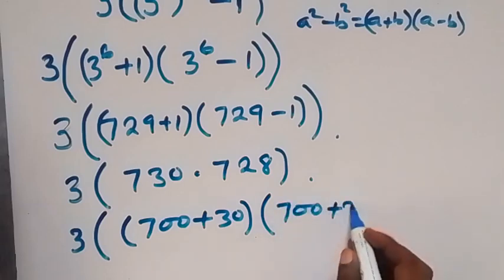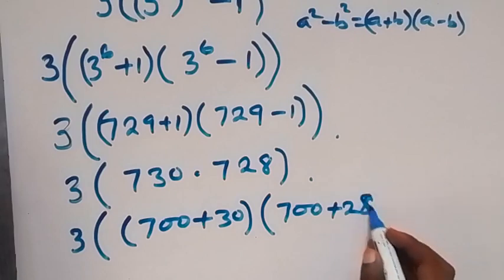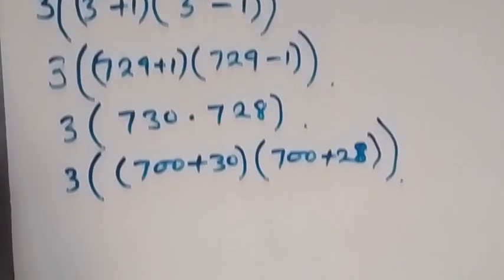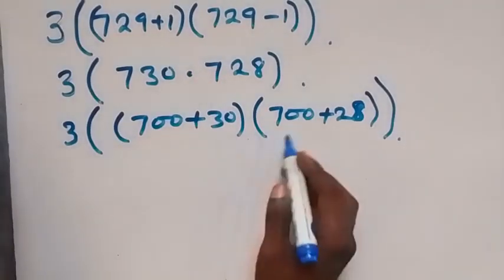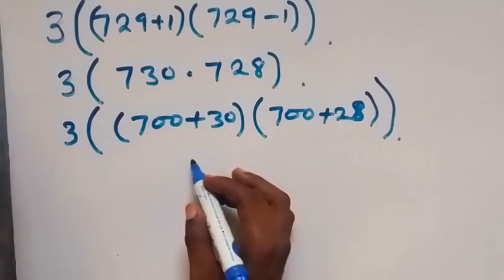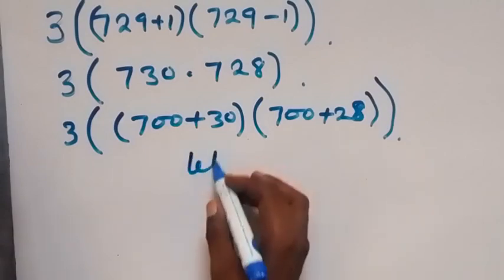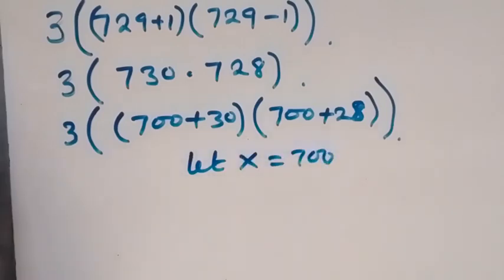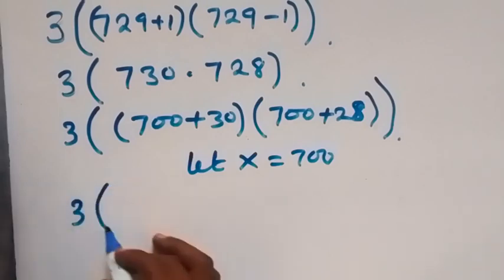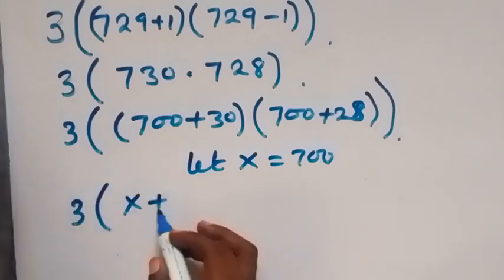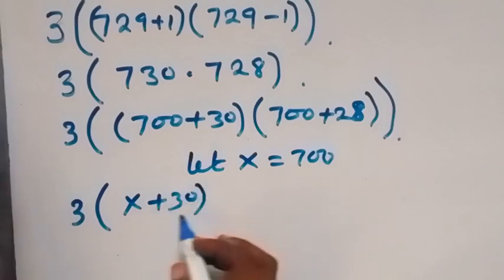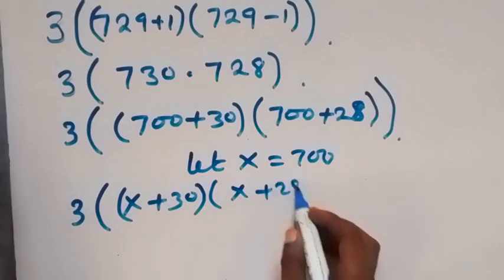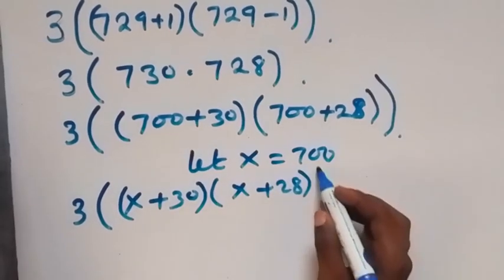Plus 28 here gives us 728. Then we close the bracket. From here, we can use a letter to represent 700. So let x be equal to 700. From here, we can equate it as 3 into bracket x plus 30, then multiply by x plus 28, then close bracket.